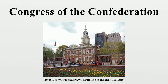The Congress of the Confederation continued to conduct business for another month after setting the various dates. On October 10, 1788, the Congress formed a quorum for the last time. Afterwards, although delegates would occasionally appear, there were never enough to officially conduct business, and so the Congress of the Confederation passed into history.